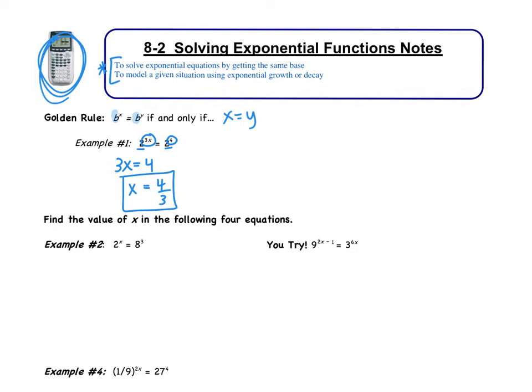For problems two, three, and four, it says find the value of x in the following. It's actually three equations. So if we look at example number two, don't just jump right in and say x equals three. The golden rule doesn't apply here. We have 2^x and 8^3. The bases aren't the same. If the bases are not the same, we cannot set the exponents equal. Now that doesn't mean we can't do this problem. It means we're going to need to do a little bit of manipulation.